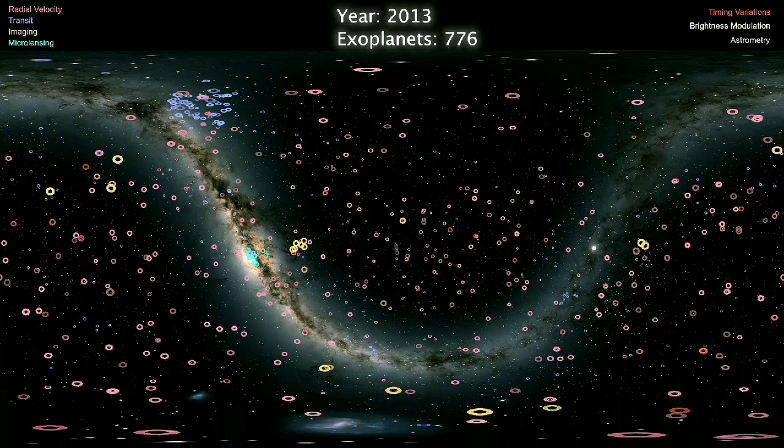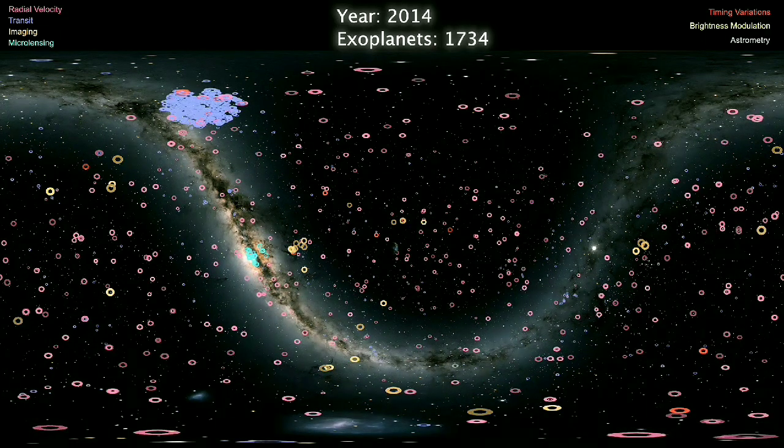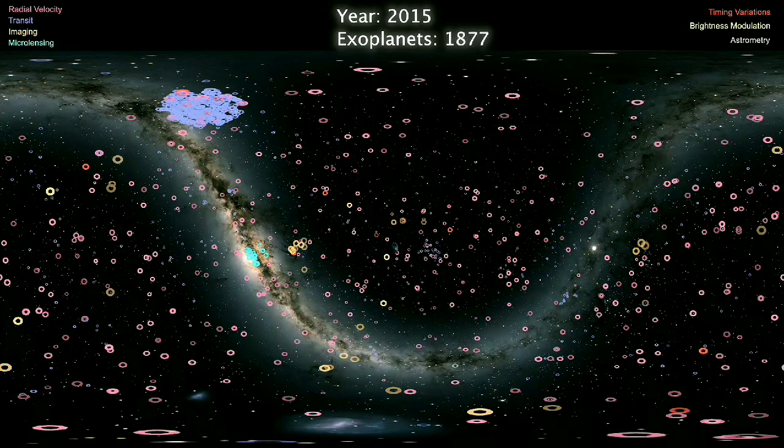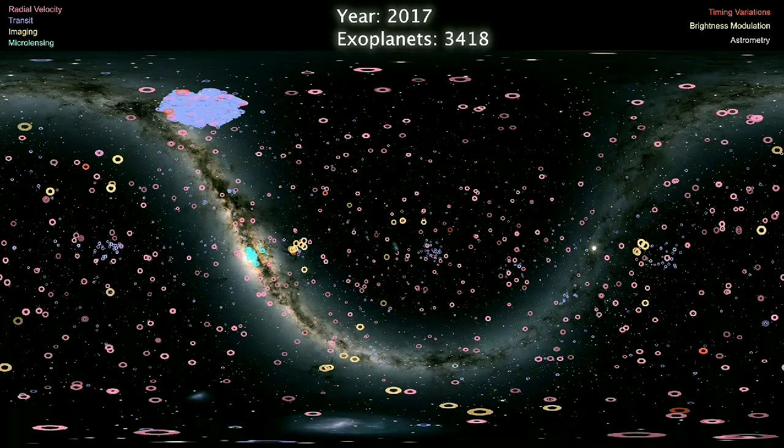Further, those exoplanets imaged directly appear in orange, while those detected by gravitationally magnifying the light of a background star, i.e. microlensing, are shown in green.